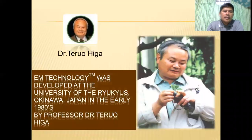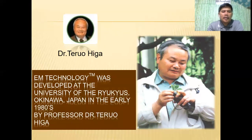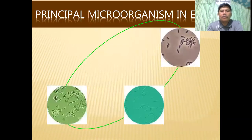EM technology was developed by Professor Pero Higa of the University of Ryukyus in Okinawa, Japan in the 1980s. So what is EM? EM consists of safe and human-friendly microorganisms — namely lactic acid bacteria, yeast, and phototrophic bacteria.